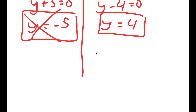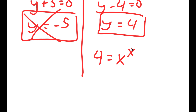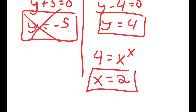So I get 4 is equal to x to the power of x, and I have to find a number that works out for this. The only number that works is 2, because 2 to the power of 2 is 4. So x equals 2 is my answer to this equation.